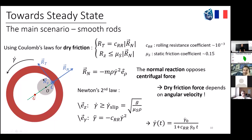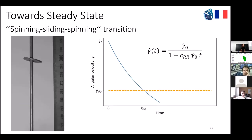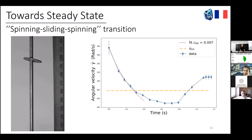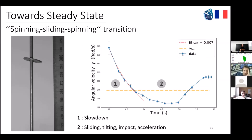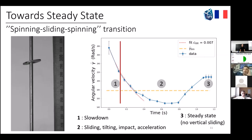We solved the equations of the second law, giving us a differential equation solvable analytically and a condition on the vertical axis for non-slipping. Our model predicts that the angular velocity of the washer will decrease and reach a threshold value beneath which it starts sliding. Our experimental results confirm this: there is the slowdown part we predicted, then it starts sliding and tilting, touches the other side of the rod, and starts accelerating towards the steady state. Notably, the angular velocity in the steady state is above the threshold value, meaning there is no vertical sliding in steady state.